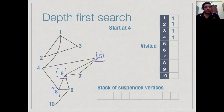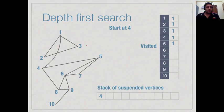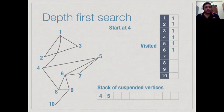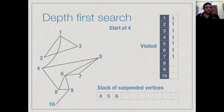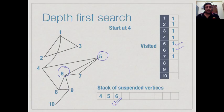We pick up 5, mark it visited, and suspend 4. From 5 we have neighbors 4, 6 and 7, so we pick up 6 and suspend 5. From 6 we have 7, 5 and 8. Since 5 is already done but 7 is not, we pick up 7 and suspend 6. From 7 we find neighbors 5 and 6, both already marked, so 7 is a dead end. We come back to 6, find 8, add 8 and suspend 6, arriving at 8.